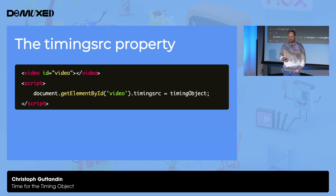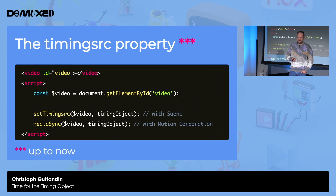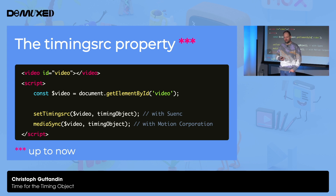The timing source could be a video player like dash.js or video.js. As defined in the spec, you grab a video element and assign a timing object to its timing source, which ensures the video stays in sync with the timing object. Changes to the video itself also get propagated back to the timing object. Since patching the native prototype is an anti-pattern and there's no native implementation yet, the current implementations use a standalone function to connect a video element with a timing object — called timing source in Sync, and media sync in the Motion Corporation implementation.